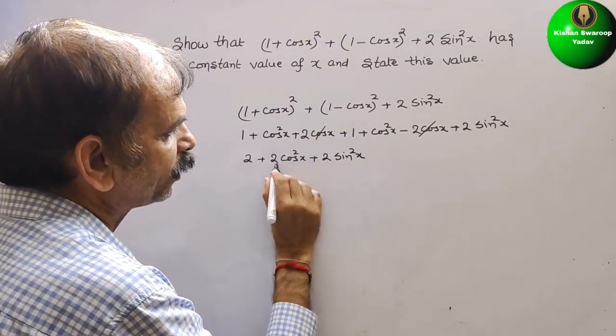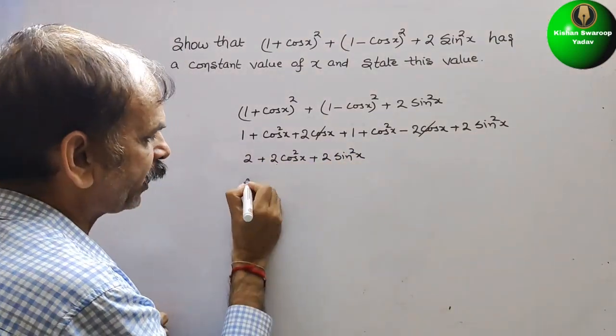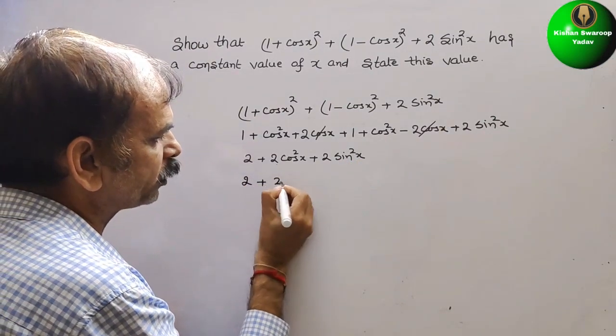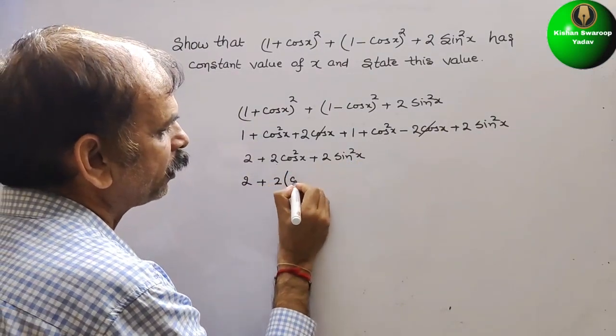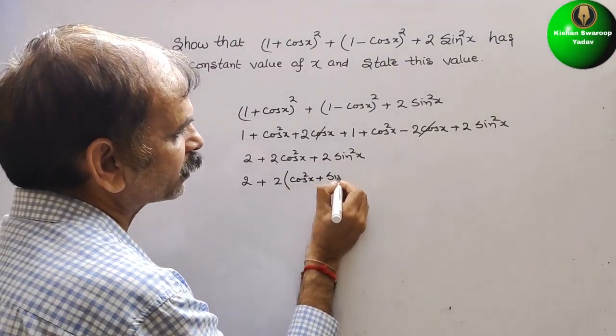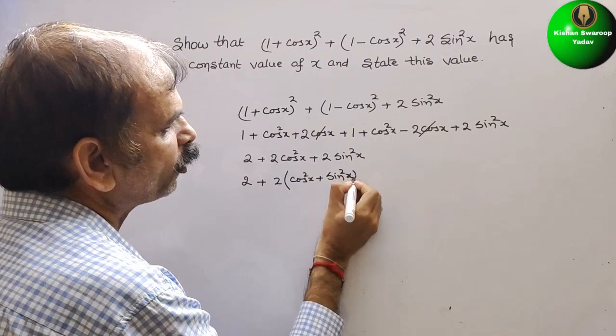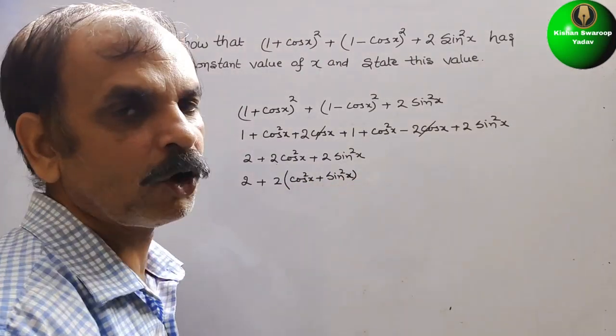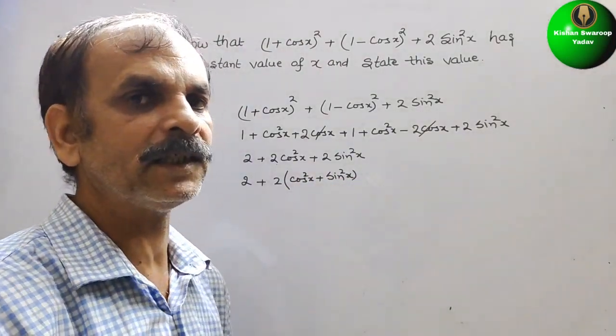So here 2 is common, that we have to take it out. So therefore, this 2 plus 2 is common, it will be cos²x + sin²x. So we know that cos²x + sin²x is 1.